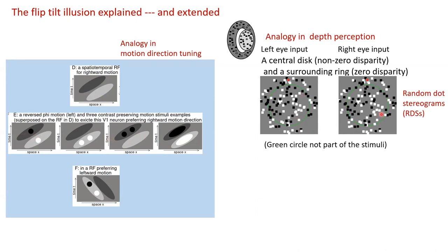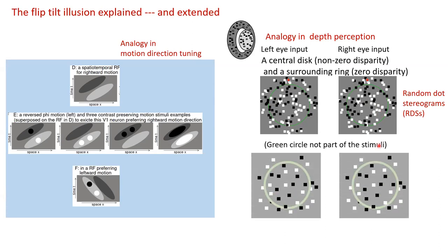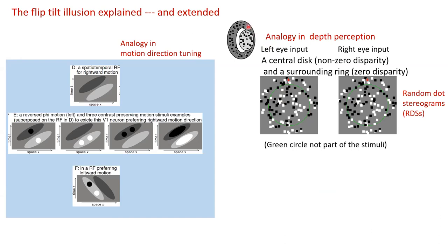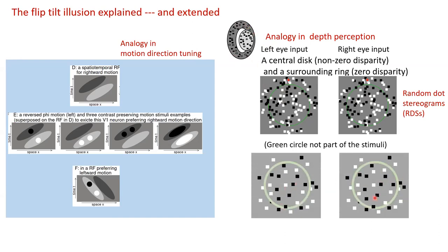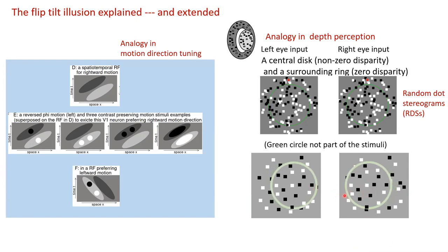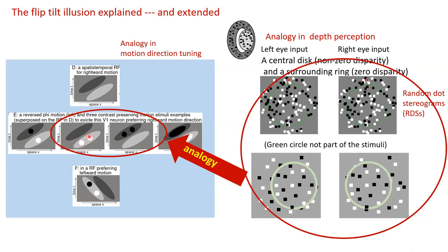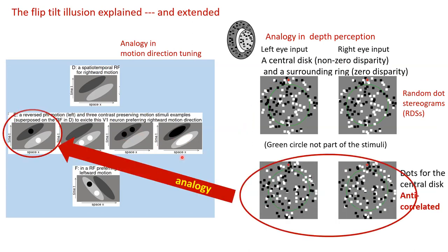You can also extend this to stereopsis, because motion is like input at time one and time two, while stereo is input to the left eye and input to the right eye. A random dot stereogram with a central disk in front of the surrounding ring is created by having identical random images and shifting the dots in the central disk by a disparity — putting the disk in front. An anti-correlated random dot stereogram has every black dot in one eye corresponding to a white dot in the other eye.